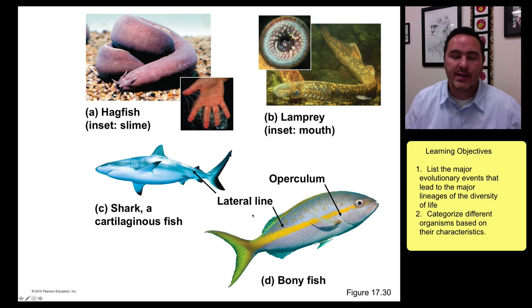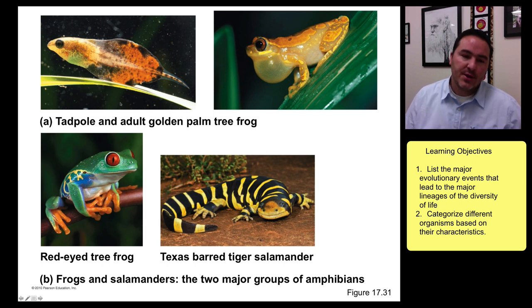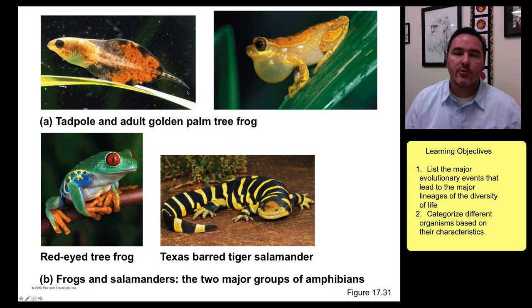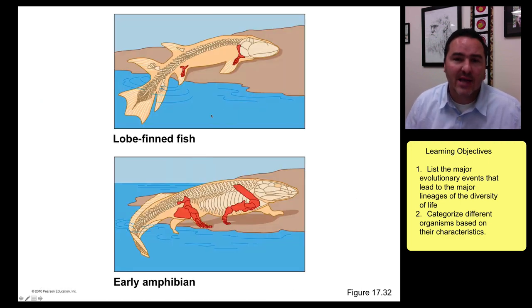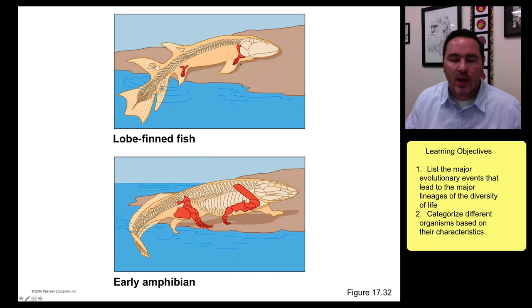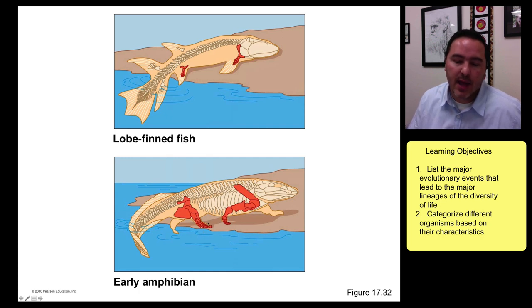From there you get hagfishes and lampreys, then eventually the cartilaginous fish like sharks and rays, and then the bony fish. Then you get organisms that live part of their life in water and part on land — the amphibians — which go through drastic metamorphosis, like tadpole to adult frog, or newt to salamander. What happened is a fish evolved to have its fins essentially turn into legs, giving rise to what's called tetrapody, or four limbs.